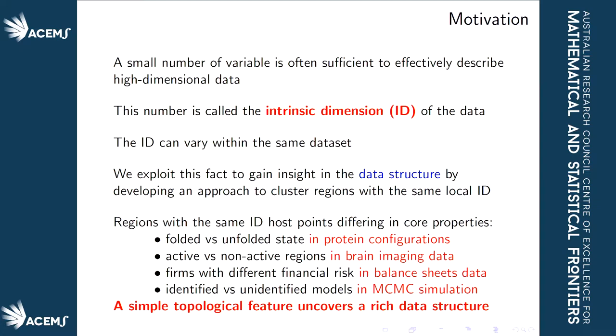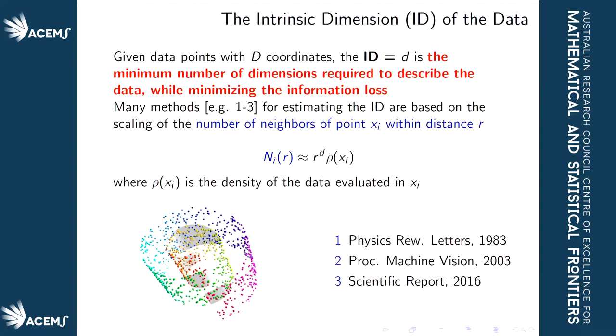Let's go towards a more formal definition of what this intrinsic dimension is. Suppose you have a set of data points in capital D coordinates. The intrinsic dimension, which I will indicate with lowercase d, is the minimum number of dimensions required to describe the data while still minimizing the loss of information when we summarize the data through this small set of coordinates.